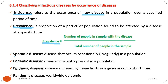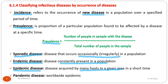Sporadic disease is a disease that occurs occasionally or irregularly in a population. Endemic disease is a disease constantly present in a population. Epidemic disease is a disease acquired by many hosts in a given area in a short period of time. Pandemic disease is a disease found worldwide — it is a worldwide epidemic.